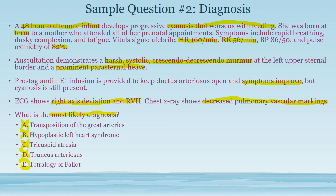The only answer remaining is tetralogy of Fallot. Decreased pulmonary vascular markings fit with pulmonic stenosis, one of the four components of tetralogy. The prominent parasternal heave fits with right ventricular hypertrophy. Prostaglandin E1 infusion helps by opening the ductus arteriosus to connect the aorta to the pulmonary artery, allowing blood flow from the left side to the right so more blood enters the lungs and becomes oxygenated — confirming tetralogy of Fallot as the diagnosis.